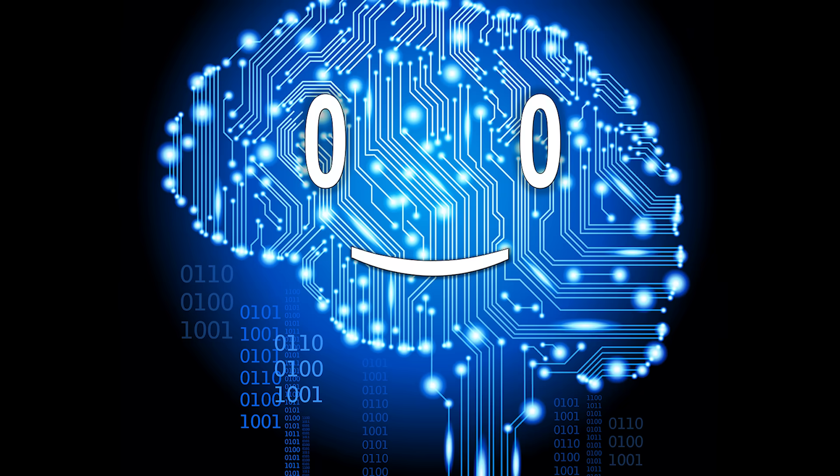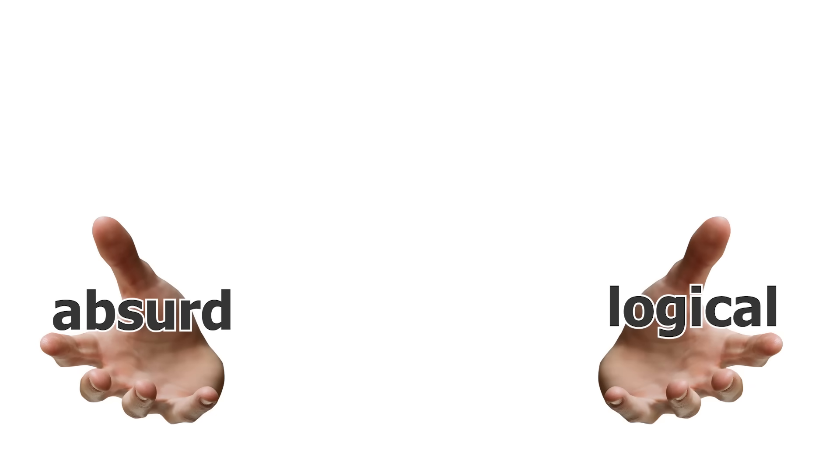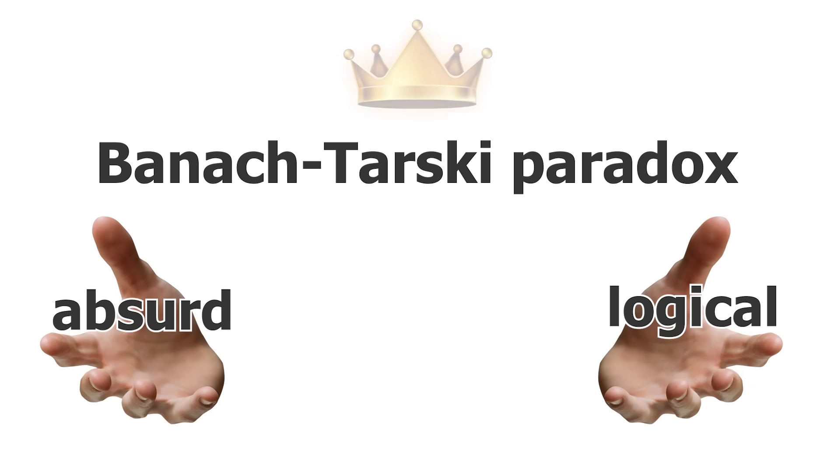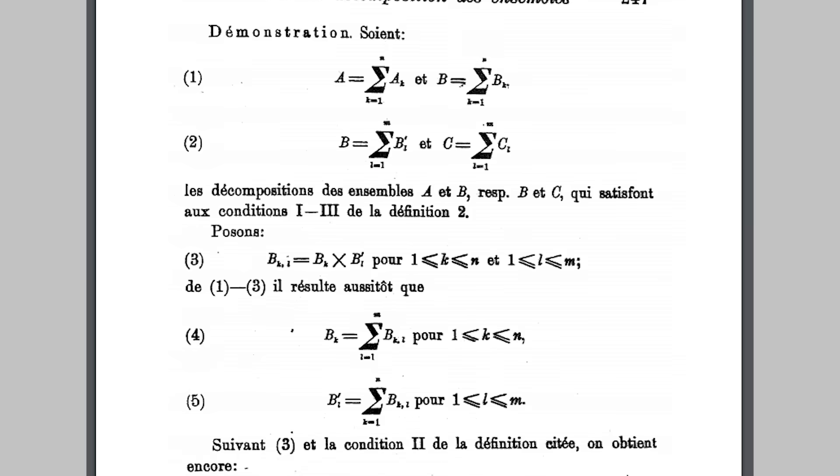And the last one is, paradoxically, the most absurd and logical one at the same time, the Banach-Tarski paradox. It is a consistent mathematical theorem which demonstrates that you can decompose a ball in five pieces, and without stretching or dilating them, you can put them back together in a way that yields you two balls which are the identical copies of the original one.